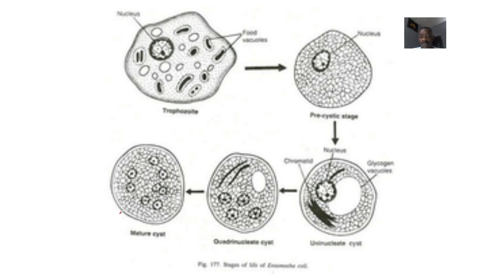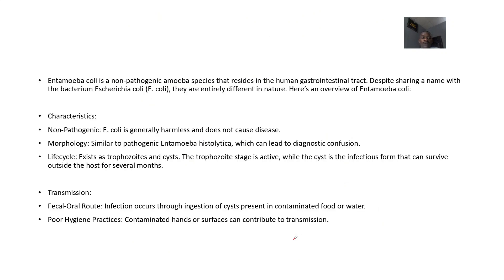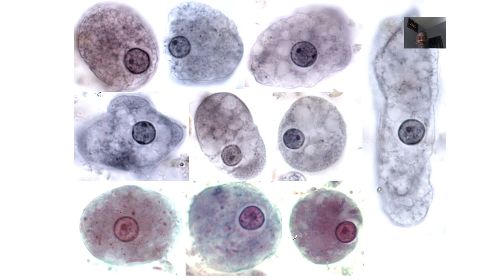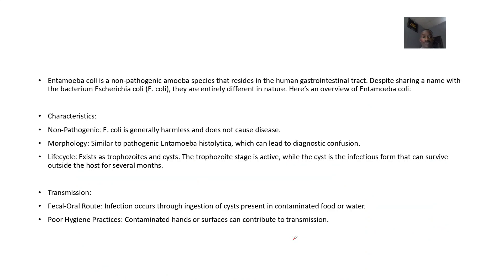This is the life cycle from the trophozoite to the pre-cystic stage. These are the different shapes which you can find this organism in. Alright, so for the Entamoeba coli...